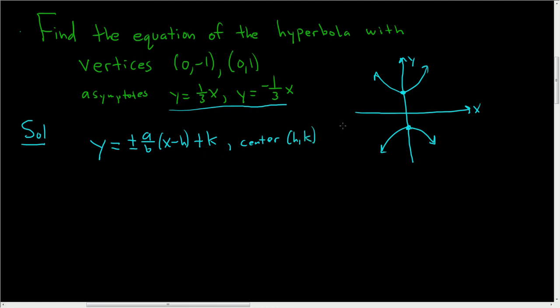So in this case, h and k are both 0 because the center is right here. So the formula is just plus or minus a over b times x because h is 0 and because k is 0.